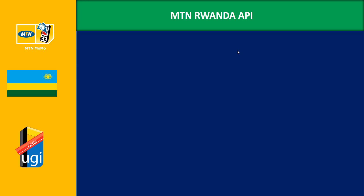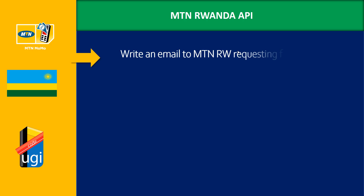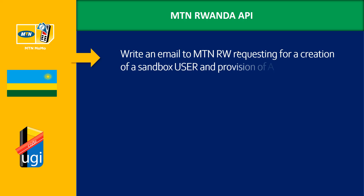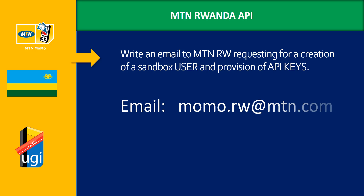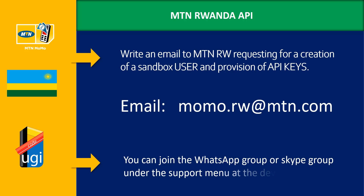For the Rwanda API, the first thing you need to do is write to MTN Rwanda requesting them to create a user for you and give you API keys. This is different from the other normal API we've been following where you create your own user and get your own API key. The email you have to send to is momo.rw@mtn.com, and the team will respond.